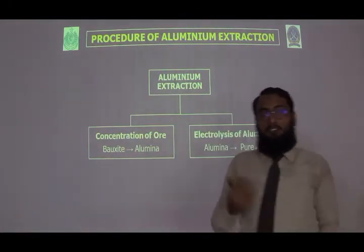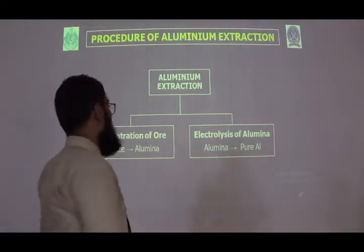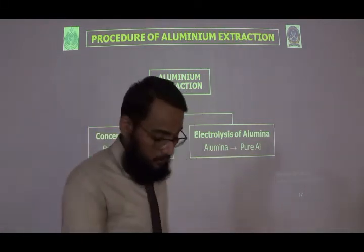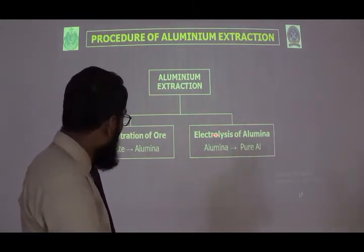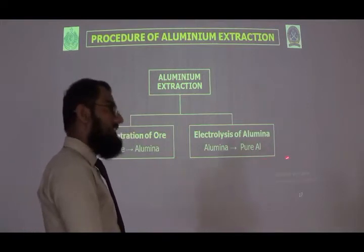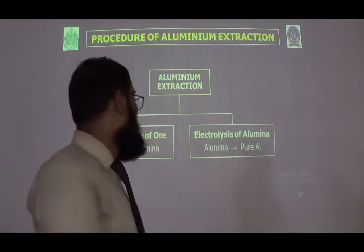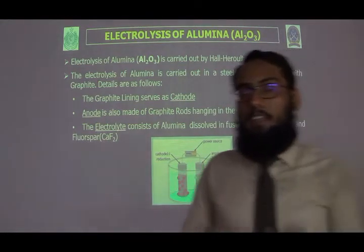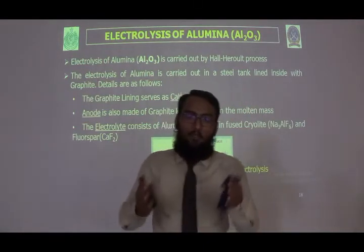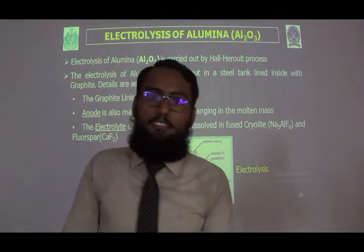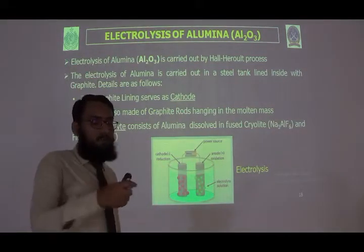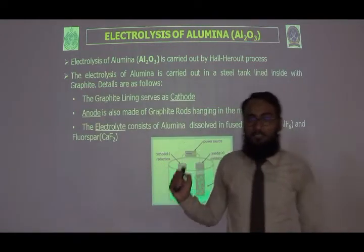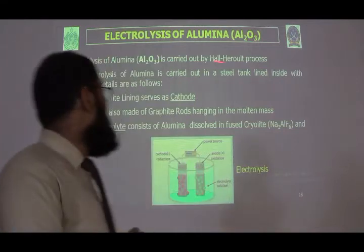Now we have purified aluminium oxide. We go to the second part: converting aluminium oxide into pure aluminium using electrolysis. The electrolysis of aluminium oxide is carried out by the Hall-Héroult process — this is a very important point for exams.